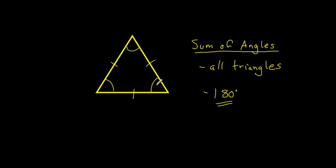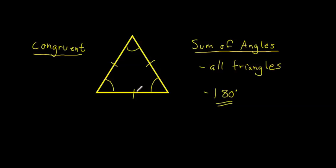In the case of an equilateral triangle, because all the sides are equal, it means that all of the angles are congruent — which means they are all the same. This angle is exactly identical to this angle, and this angle is exactly identical to that angle. The sum of all angles for a triangle says that all the angles must add up to 180 degrees, and that goes for all triangles.